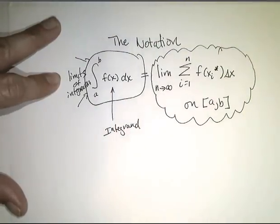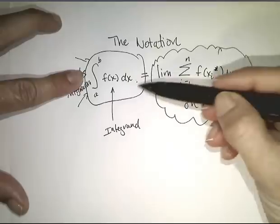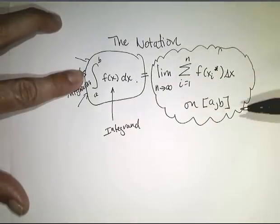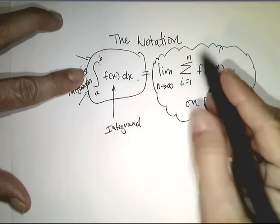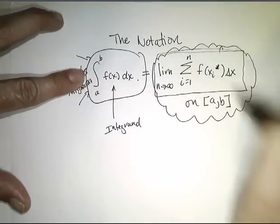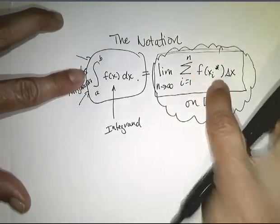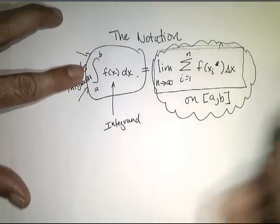Now, it is very tempting to think that this right here represents the area under the curve. And that would be natural since that's how we developed this idea. But, this limit right here, although defines the area under the curve of a positive valued function, will have more meaning if our function f is not always positive valued.